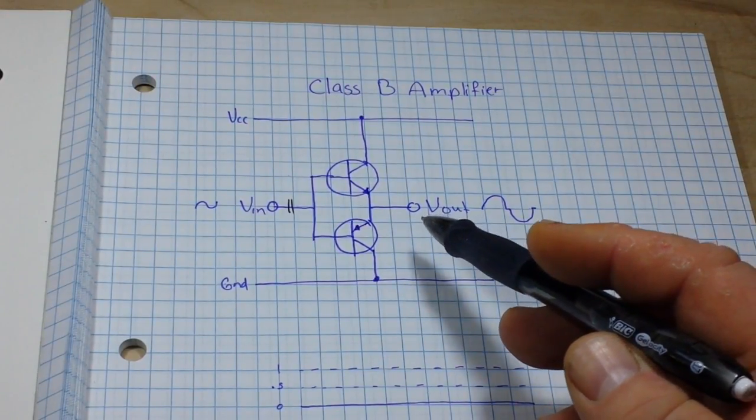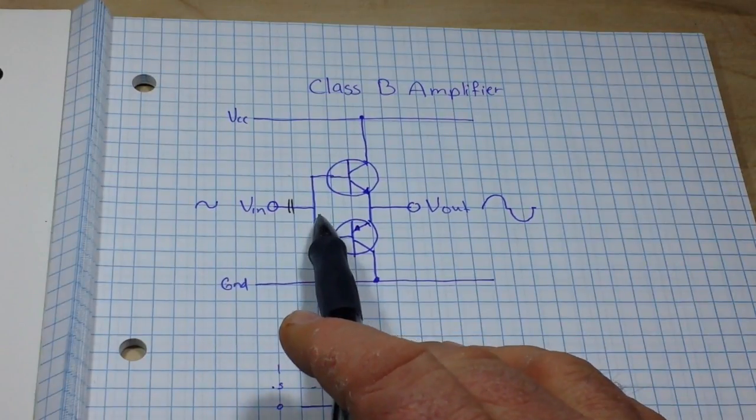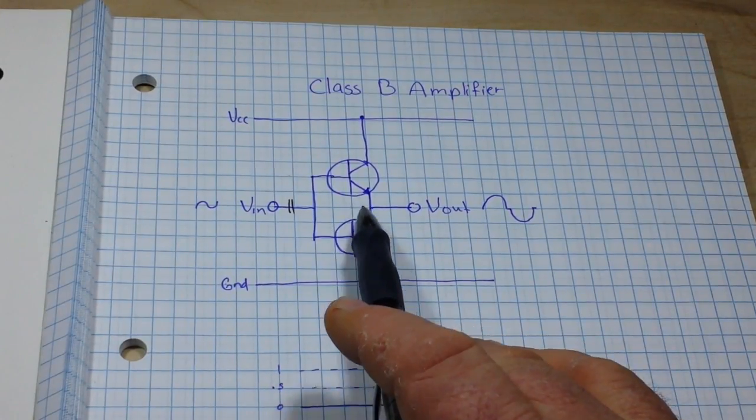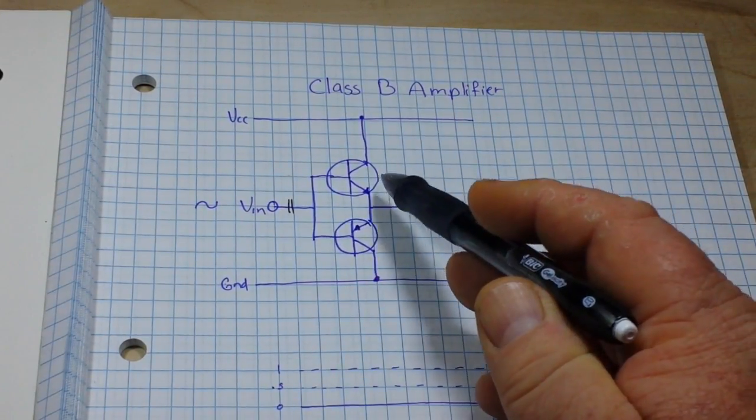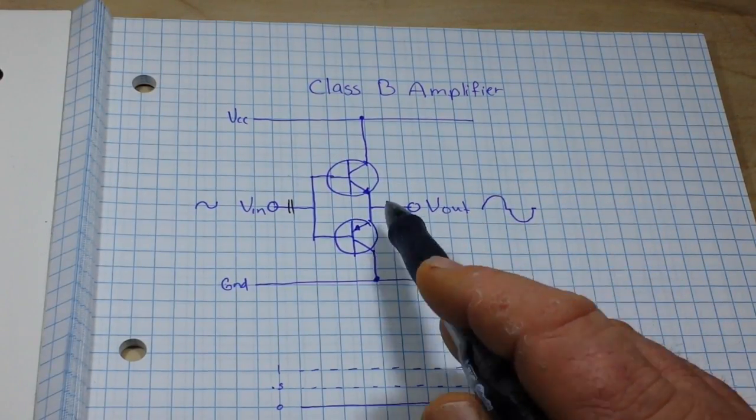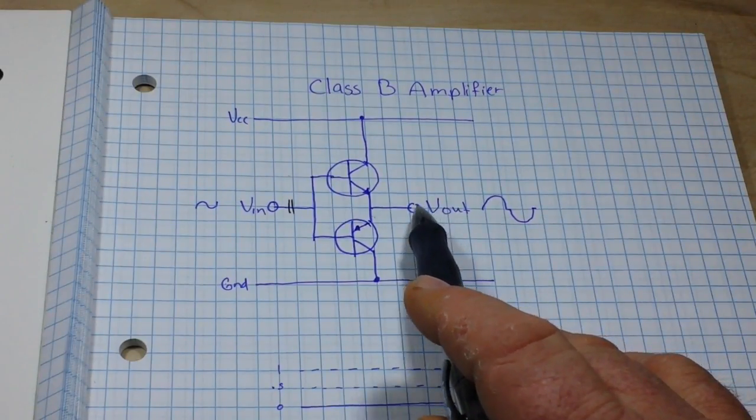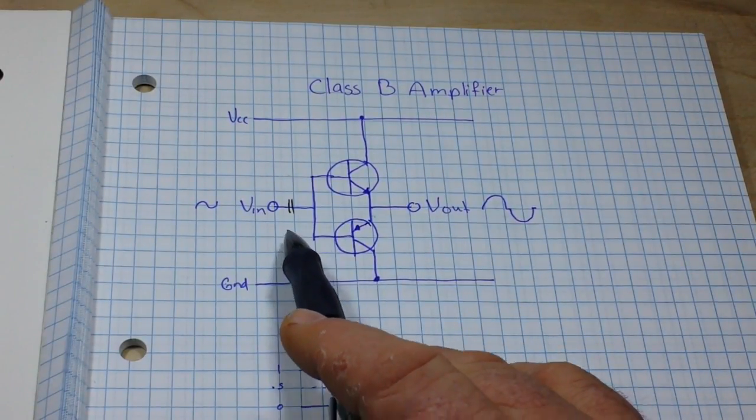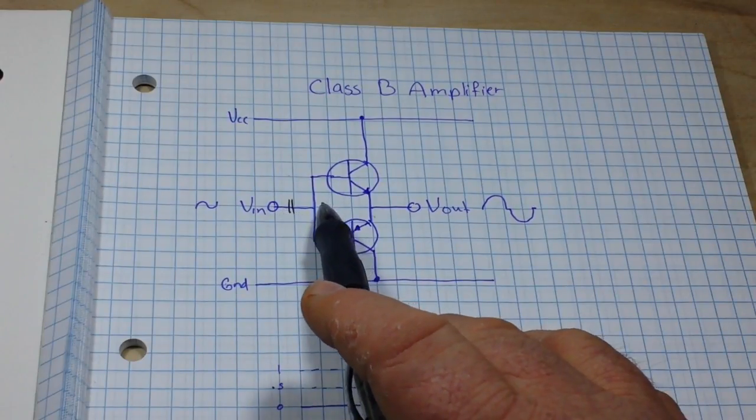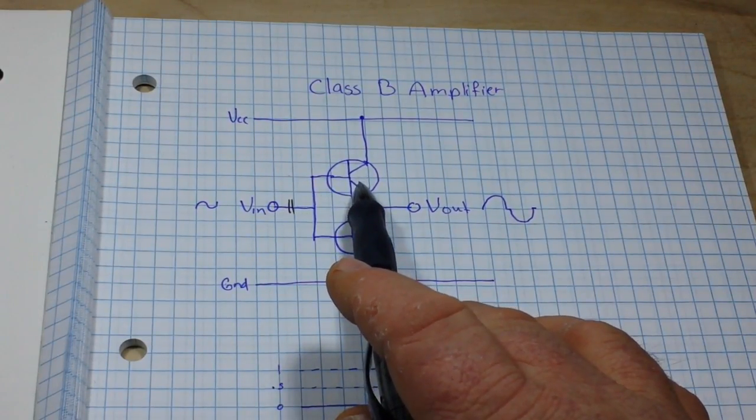For the Class B now, we could still definitely use a coupling capacitor, but all those resistors that were needed for bias are gone. What we have here is our input signal coming into two parallel transistors, an NPN and a PNP, and then our output signal.